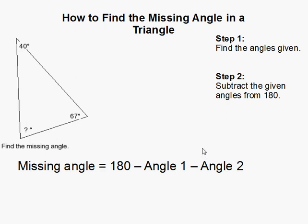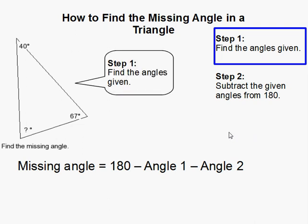How to find the missing angle in the triangle. The first thing we have to do is find the angles that are given. So in this case we're given that one angle is 40 degrees and that another angle is 67 degrees.